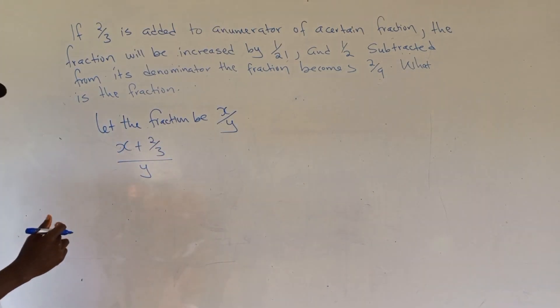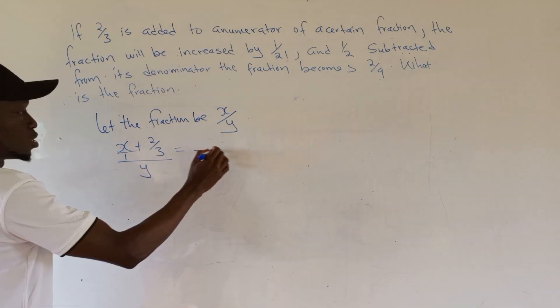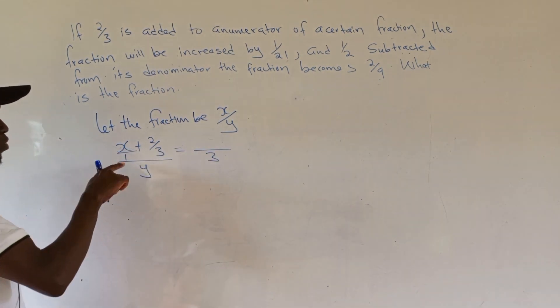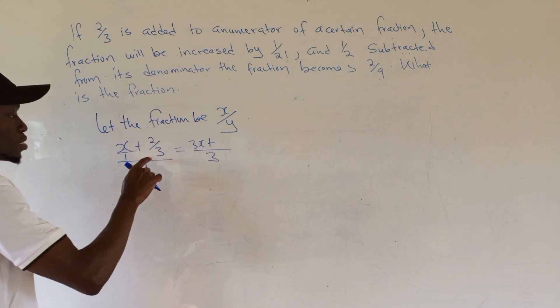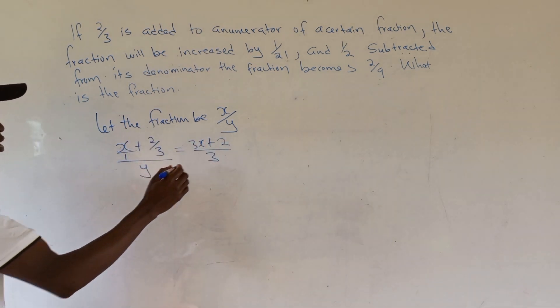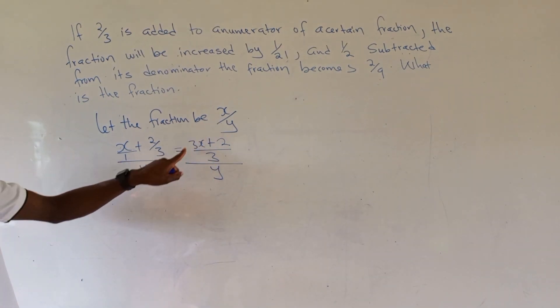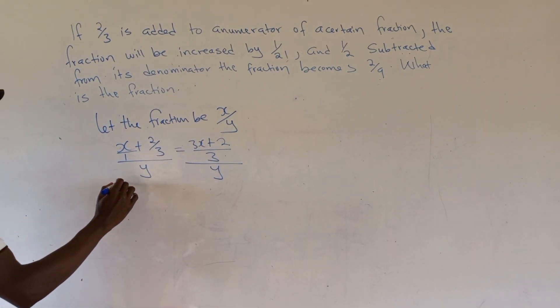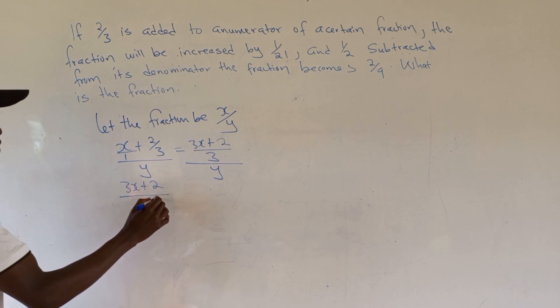We can simplify this. x is x/1, so with denominator 3: 3 times x is 3x, plus 2. That's the numerator, 3x + 2. The denominator is y.